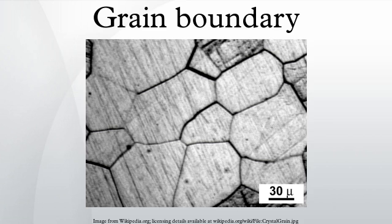A grain boundary is the interface between two grains, or crystallites, in a polycrystalline material. Grain boundaries are defects in the crystal structure and tend to decrease the electrical and thermal conductivity of the material. Most grain boundaries are preferred sites for the onset of corrosion and for the precipitation of new phases from the solid. They are also important to many of the mechanisms of creep.